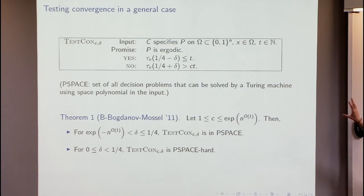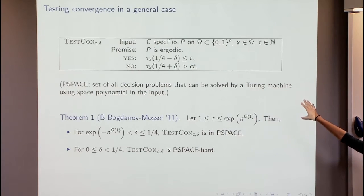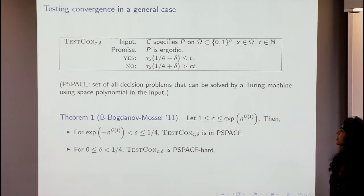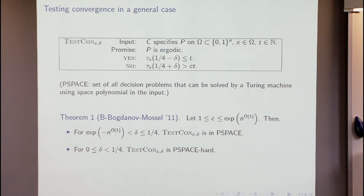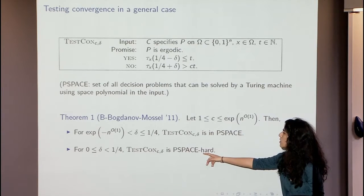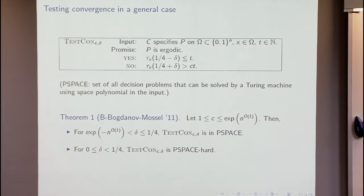Our first problem, the most general one, turns out to be doable in PSPACE and also PSPACE-hard. PSPACE is the set of all decision problems which a Turing machine can decide using a polynomial amount of space in the input. I'll tell you about showing the second part of the result — that the problem is PSPACE-hard. To show PSPACE-hardness, you take a PSPACE-hard problem and reduce from it to an instance of this testing convergence problem.